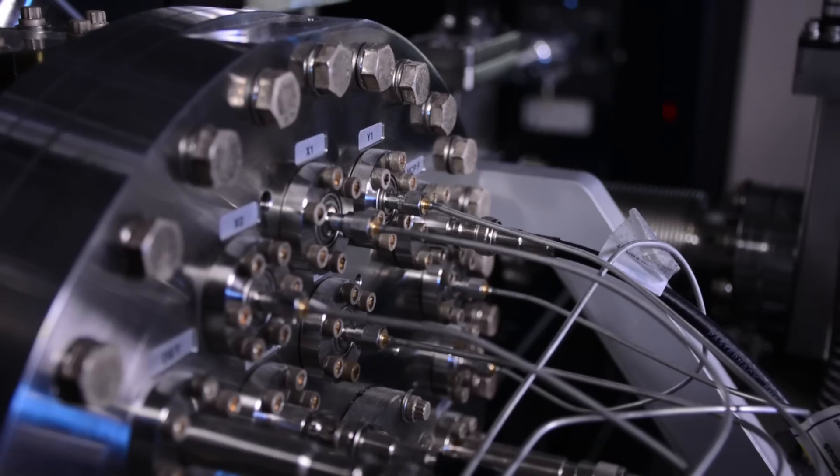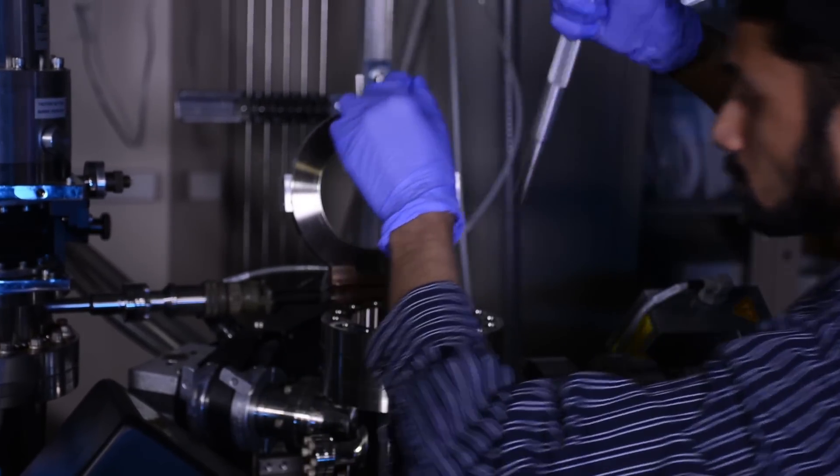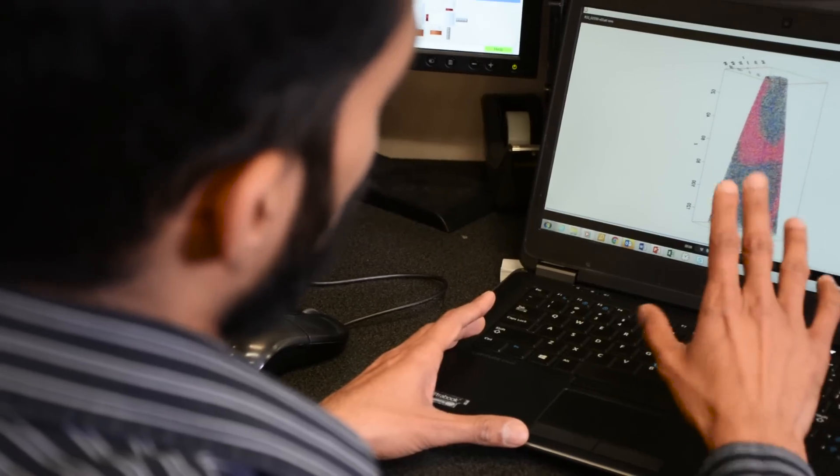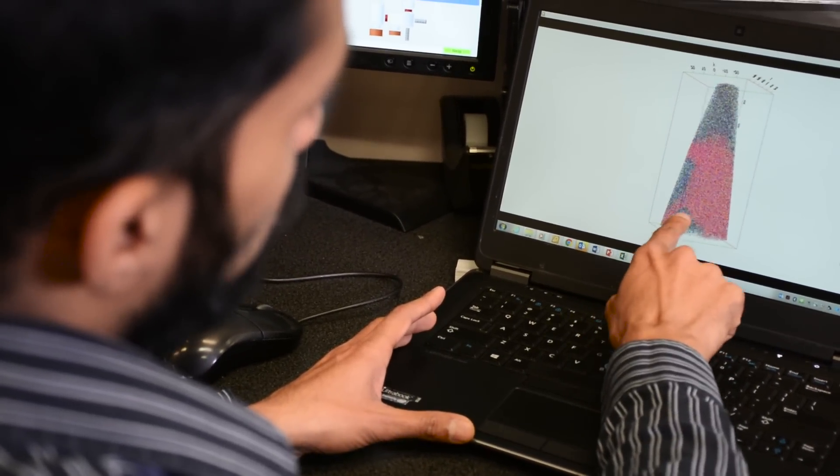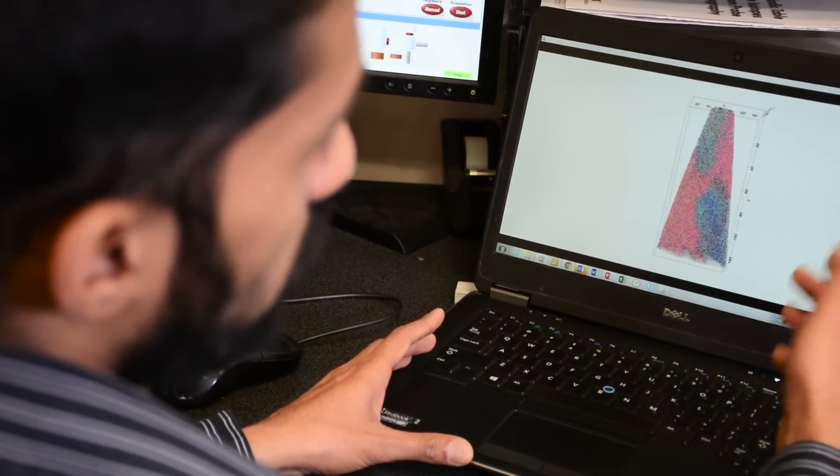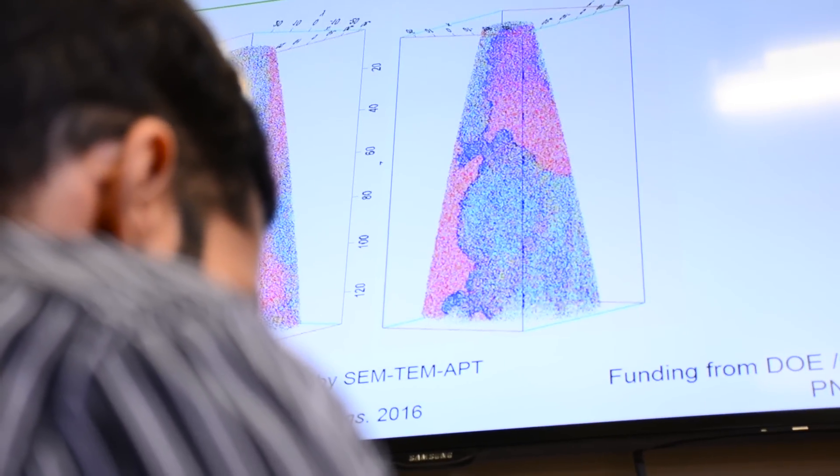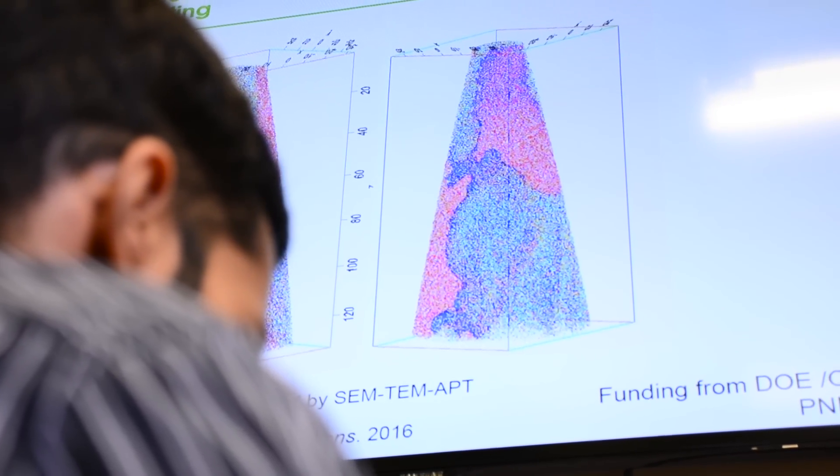To look at that, we did atom probe tomography, which tells you where the individual atoms are located at a really small length scale. So what we are looking at is how the atoms are distributed. The bluish regions denote all the titanium and aluminum atoms segregating to that region, and the red and yellow regions are the vanadium and iron atoms.